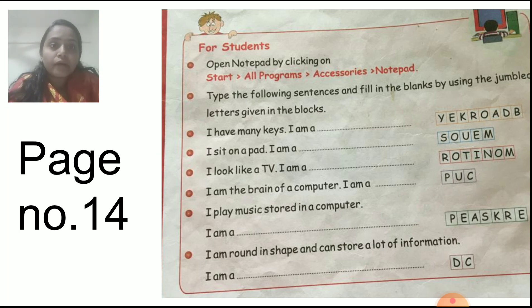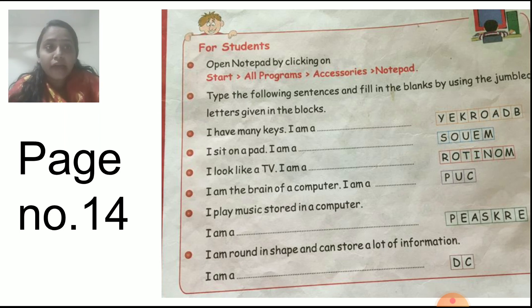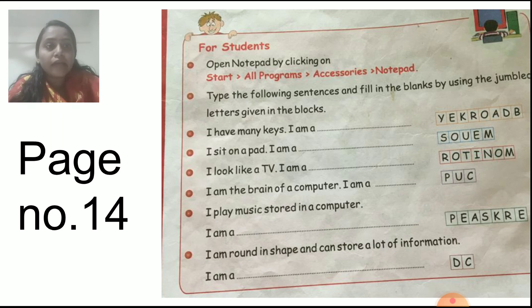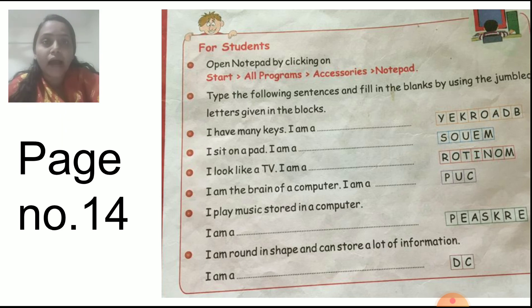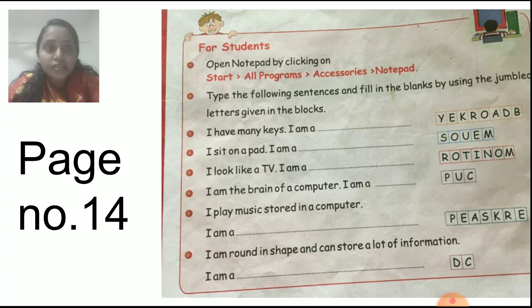Next: I play music stored in a computer. I am a speaker — S-P-E-A-K-E-R. Correct the spelling: S-P-E-A-K-E-R. Next: I am round in shape and can store a lot of information. I am a CD — C-D. Write the spelling: C-D.